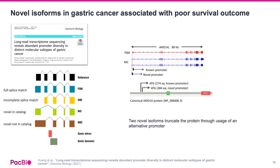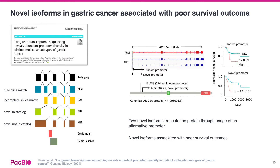You will hear more about SQANTI in the later recorded session. By applying SQANTI, researchers found that for the ARID1A gene, two novel NIC isoforms shown in blue use a novel promoter that changes the open reading frame. Further, the novel isoforms using the novel promoter are associated with poor survival outcome. In contrast, the known FSM isoform shown in red is not associated with poor survival outcome.